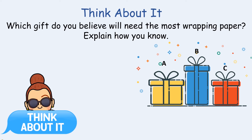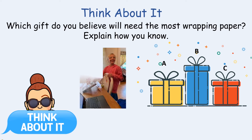I asked my bonus son Charlie what he thought, and here's his answer: 'I think B will need the most wrapping paper because it's the tallest. But then again, I think A will need the same amount because if you squish B down, it would be like the same as A. But C is a little bit shorter than A. So A and B will need the most.' We're going to investigate the concept of wrapping paper as we continue throughout this lesson.